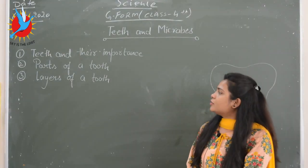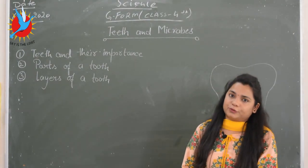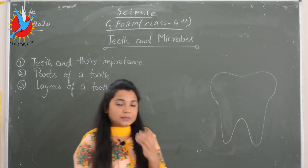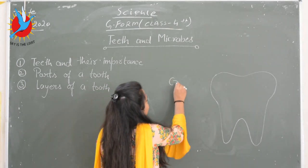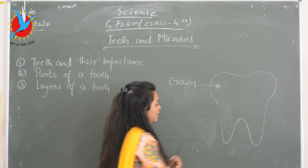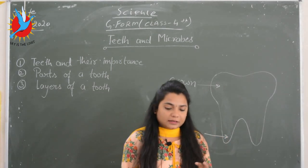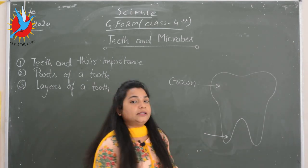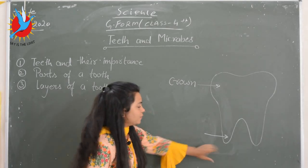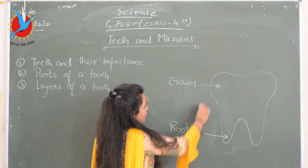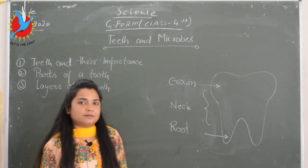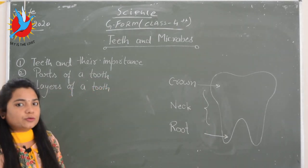Now let's discuss the second topic: parts of a tooth. There are three parts of a tooth. The uppermost part, which is visible to us very easily, is called the crown — you can see it easily in the mirror. The lowermost part is called the root; just as trees are deeply rooted in the soil, our teeth are embedded in our gums with the help of roots. The middle part is known as the neck.